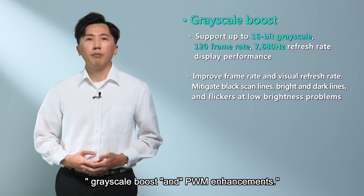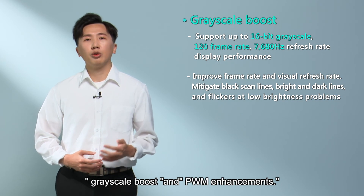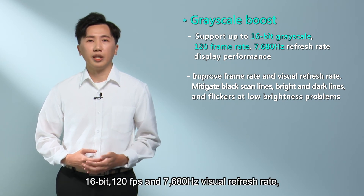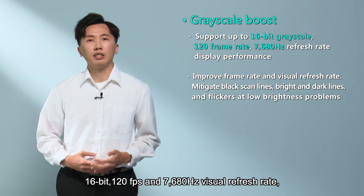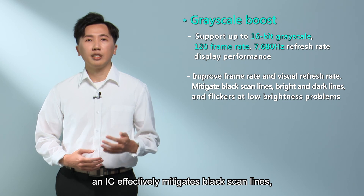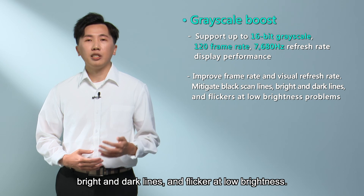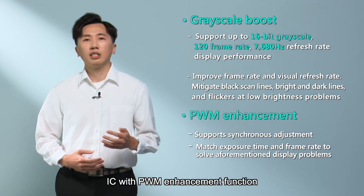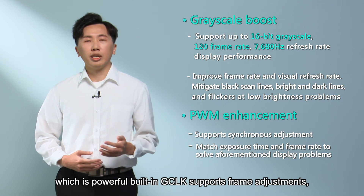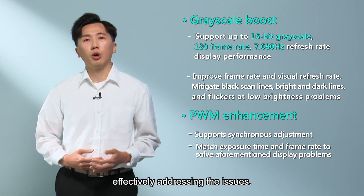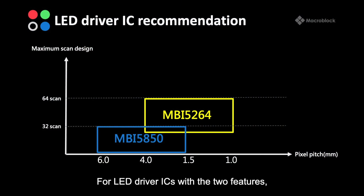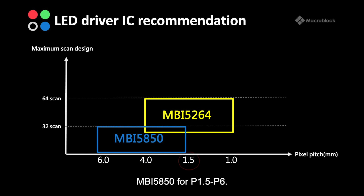Solution-wise, we recommend ICs with grayscale boost and PWM enhancements. Supporting grayscale boost, 16-bit 120fps and 7680Hz visual refresh rate, an IC effectively mitigates black scan lines, bright and dark lines, and flicker at low brightness. An IC with PWM enhancement, featuring powerful built-in GCLK, supports frame adjustments to effectively address these issues. For LED driver ICs with these two features, we recommend MBI5264 for P1 to P4 and MBI5850 for P1.5 to P6.